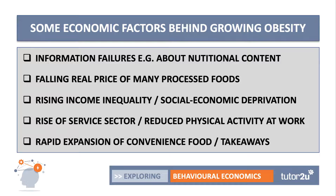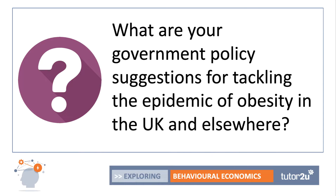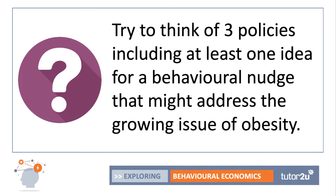Those are some of the key reasons behind growing obesity. It raises interesting questions of the kind we look at in A-level economics: what should government do, if at all? If you think it should, what are your government policy suggestions for tackling the epidemic of obesity in the UK and in other countries? In a lesson I'd have a breakout session where small groups try to think of at least three policies that could address this issue and justify them. Because this is a session on behavioural economics, at least one of the ideas has to be a behavioural nudge that might address the growing issue of obesity.